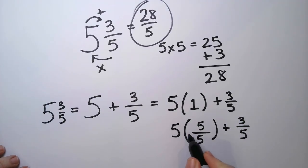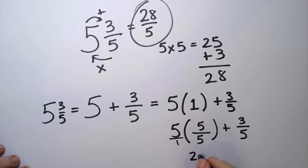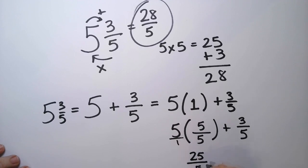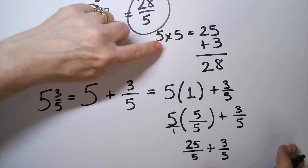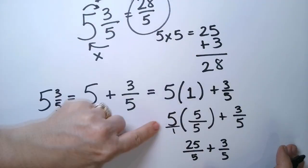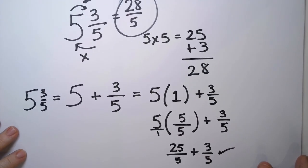And to multiply a number by a fraction, this is 5 over 1. So, 5 times 5 is 25 over 5 plus 3 fifths. Is this starting to look familiar up here? Yep. There are many ways of going about this problem.